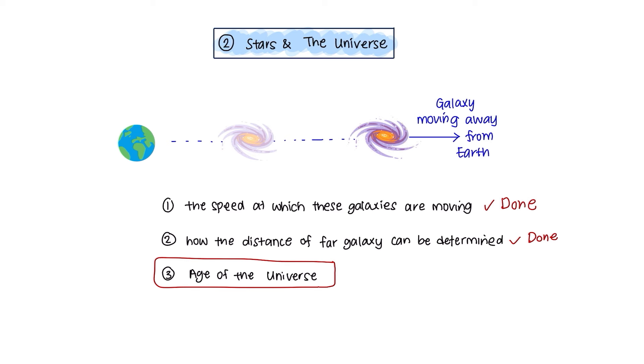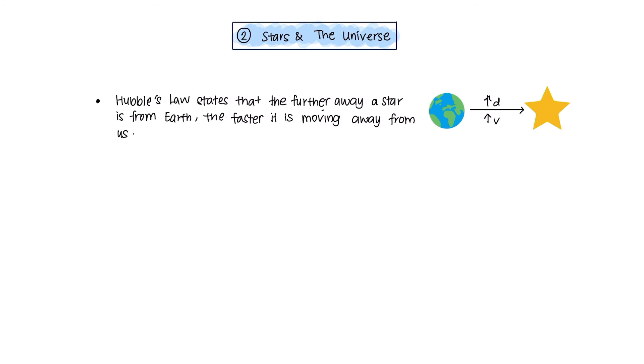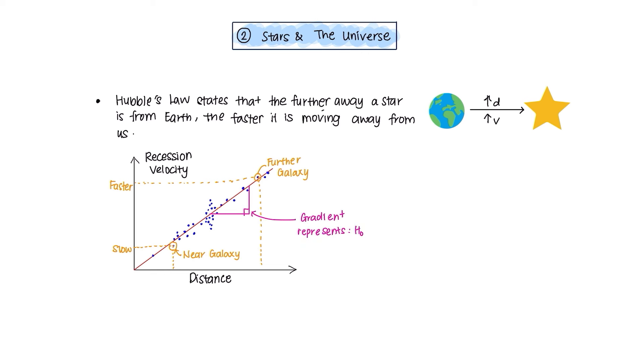And the last part, the age of universe. The Hubble law states that the further away a star is from Earth, the faster it is moving away from us. You can see the relationship of the distance versus the recession velocity here. And the gradient here represents the Hubble constant, which is 2.2 × 10^-18 seconds. Hereby, the gradient of the graph can be used to find the age of the universe. By taking the reciprocal, which is 1 over Hubble constant, the units will become seconds. Therefore, using this, you can estimate the age of the universe, which is about 13.7 billion years, and that all the matter in the universe was present at a single point.